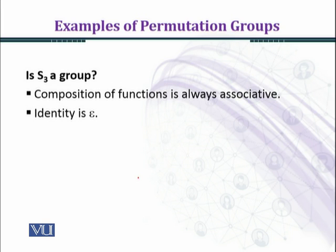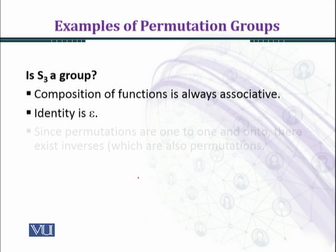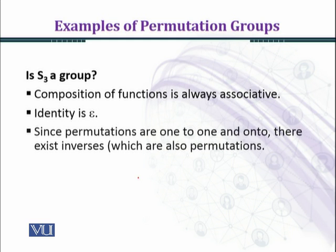At the level of Sn, the identity permutation maps 1→1, 2→2, and so on up to n→n. So the identity element exists in Sn. Since permutations are one-to-one and onto, inverses exist for every element.